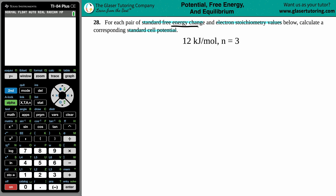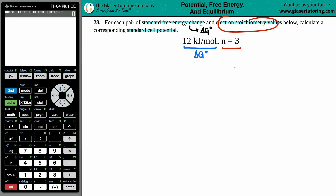Starting with the free energy change — a change in something is always a delta value, and free energy is Gibbs free energy, so this is a ΔG° value. The degree sign just means we're under standard conditions. It's an energy value, so it has to have some type of joule unit attached to it. Since 12 kilojoules per mole has the energy unit, I know this is ΔG°, which means the n of 3 is the electron stoichiometry value.